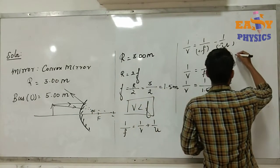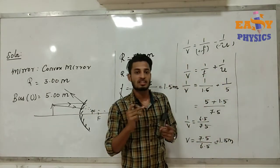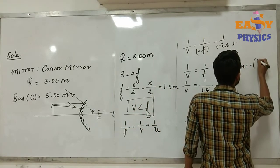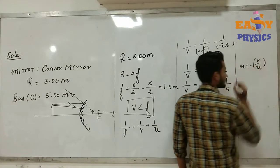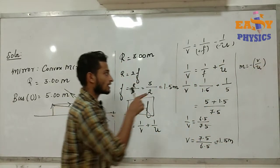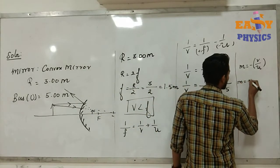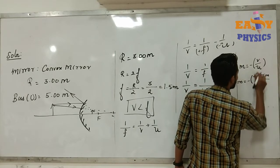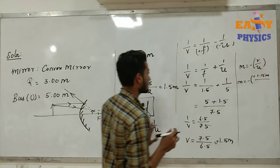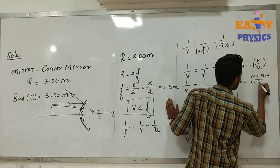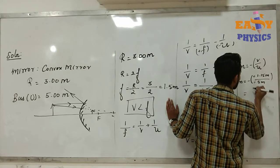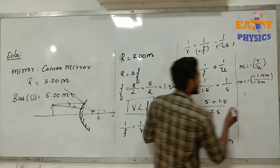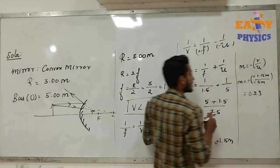Next, we find the size of the image using magnification. The magnification formula is m equals minus v by u. Substituting, m equals minus of positive 1.15 divided by negative 5 meters. The negatives cancel, giving m equals 1.15 divided by 5, which equals 0.23.